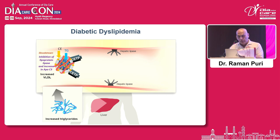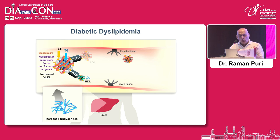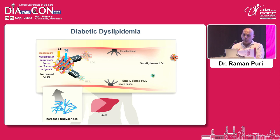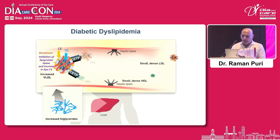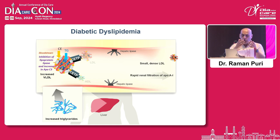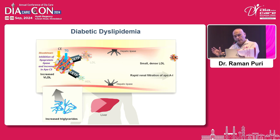Whatever extra triglyceride the LDL cholesterol particle gets from VLDL is removed by hepatic lipase. Overall, we get an LDL particle which is smaller in size because it has lost both cholesterol and triglyceride — so this particle becomes small dense. Similarly, excess triglyceride in HDL is also removed by hepatic lipase and this HDL gets excreted in the urine, so you get low HDL cholesterol in patients with insulin resistance.